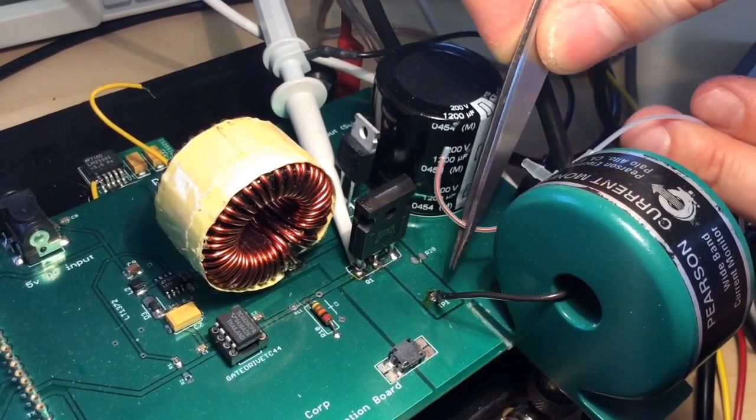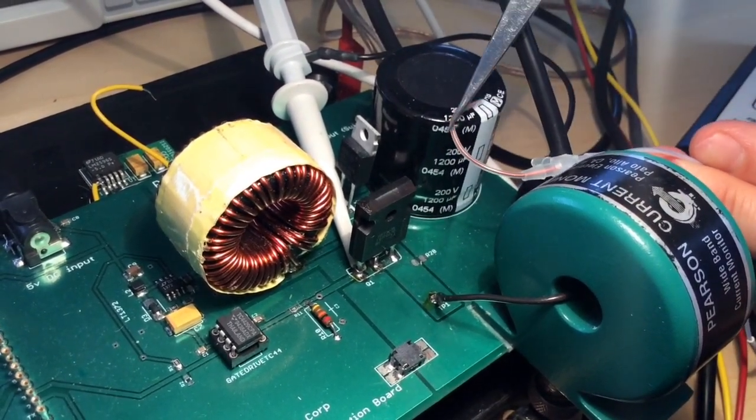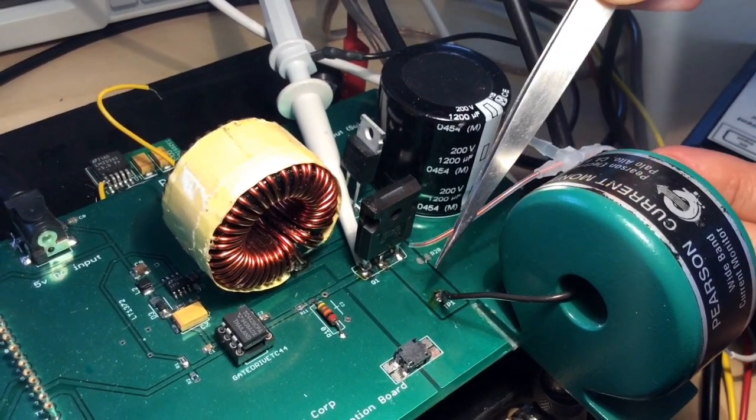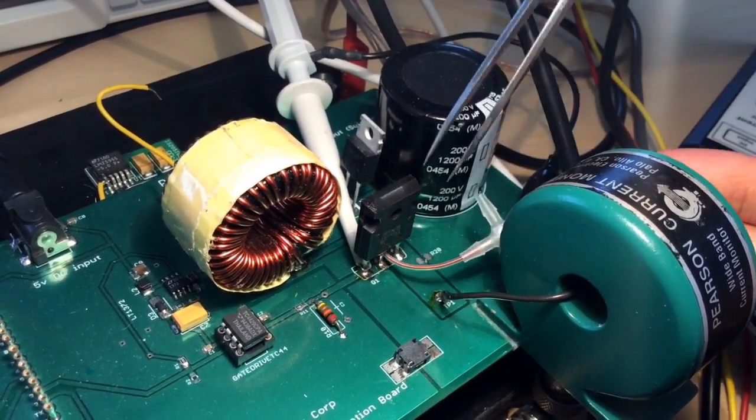This is the 1.2 millimeter diameter Rogowski coil, also considered the smallest Rogowski coil available anywhere. As you can see, it easily is moved through the legs of the power semiconductor.